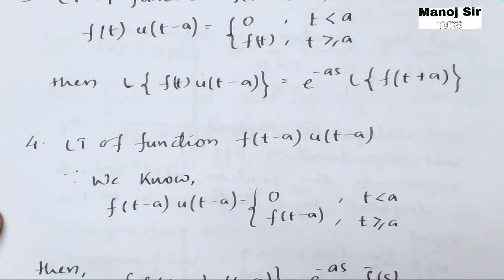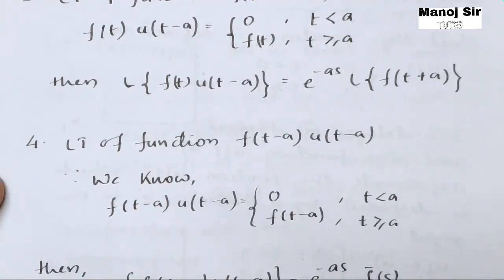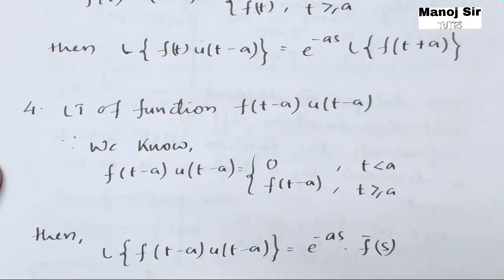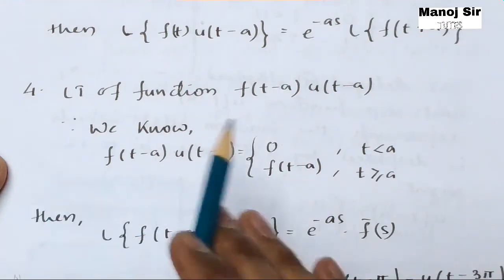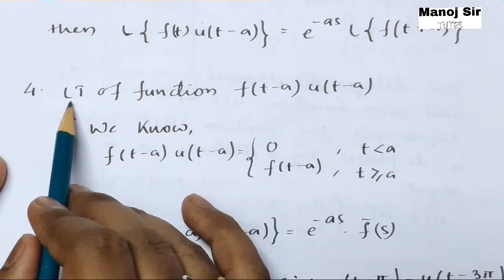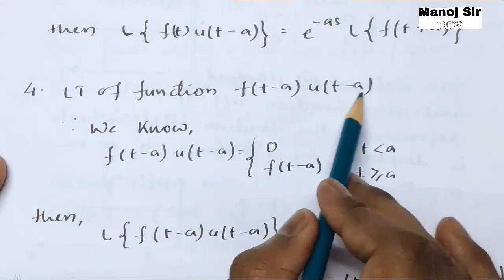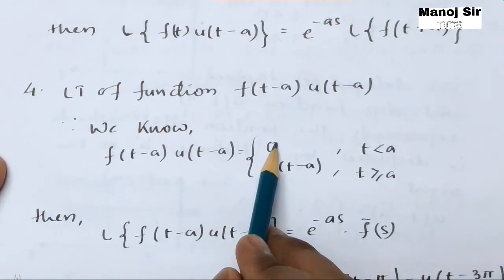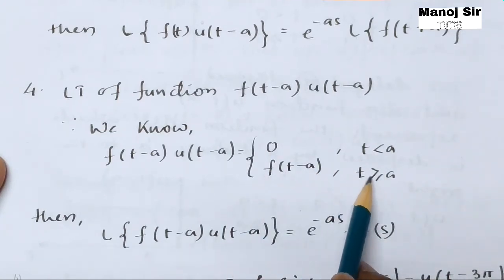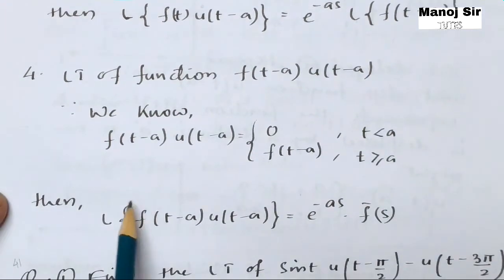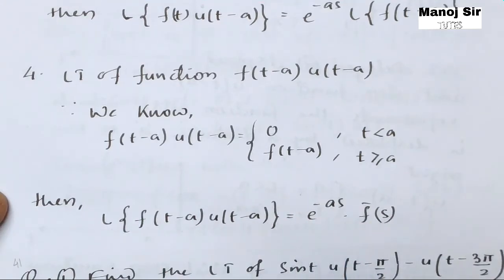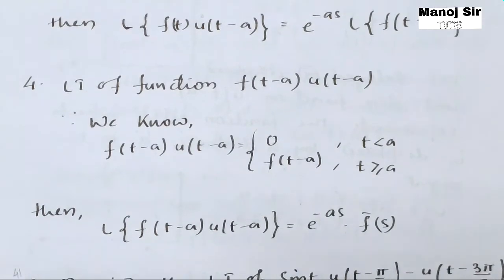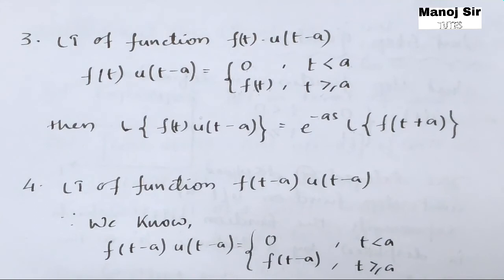Now coming to the last formula. This fourth part is not as important as far as numericals are concerned. The Laplace transform of f(t minus a) into u(t minus a): since we know that f(t minus a) into u(t minus a) equals 0 when t is less than a, and equals f(t minus a) when t is greater than or equal to a. In that case, the Laplace transform of f(t minus a) into u(t minus a) equals e to the power minus a s into F-bar of s.